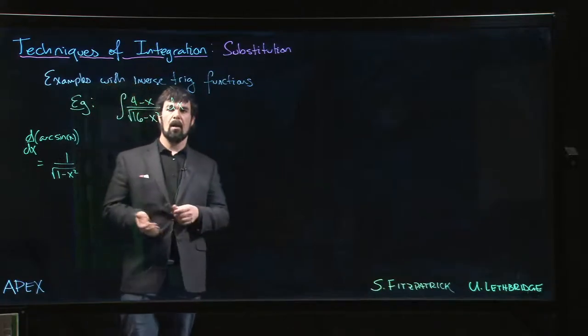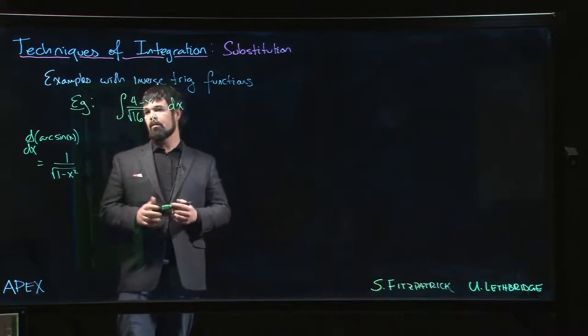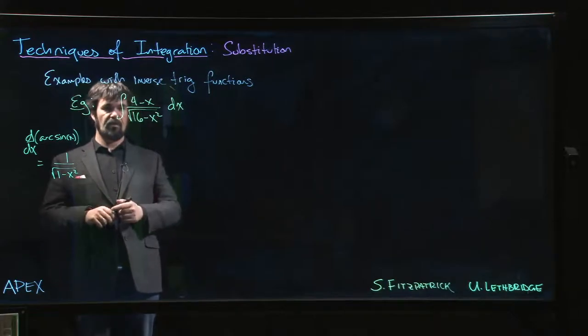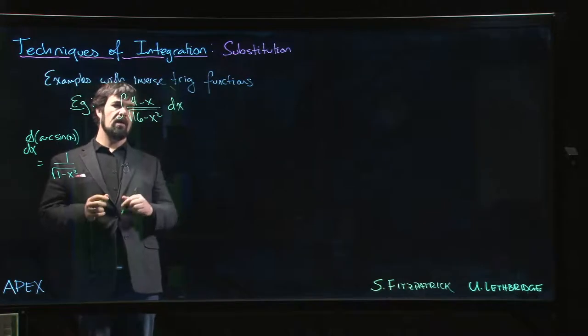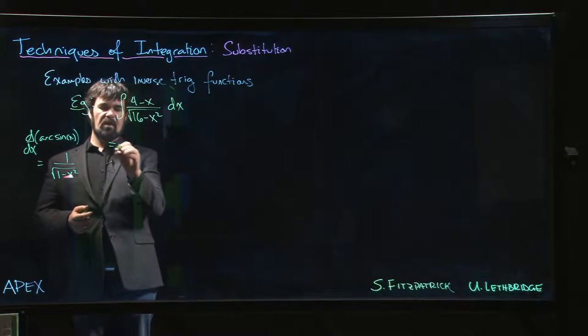What often works in cases like this, where you know that if you just had a constant on top you'd be dealing with an inverse trig function, is you can break this into more than one part. So we can divide the 4 and the x separately and we can actually write this as a sum of two integrals.